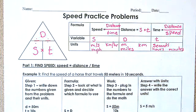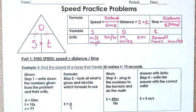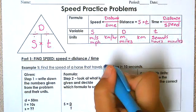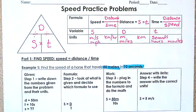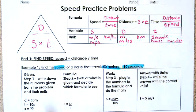The top section of the worksheet will help us answer the questions below. For the first practice example, as we read through the problem we want to highlight or circle the important information. Example one: find the speed of a horse that travels 50 meters in 10 seconds. So 50 meters is our distance, 10 seconds is the time, and we're looking for speed (s).